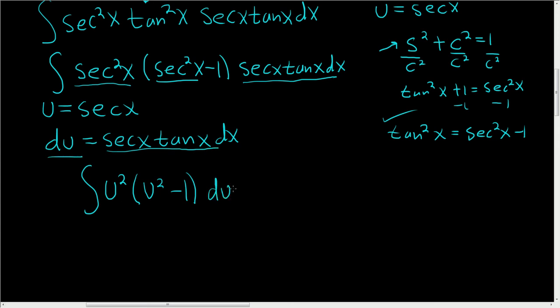Alright, du. Distribute. u squared times u squared is u to the fourth. And then u squared times negative 1 is negative u squared, du.